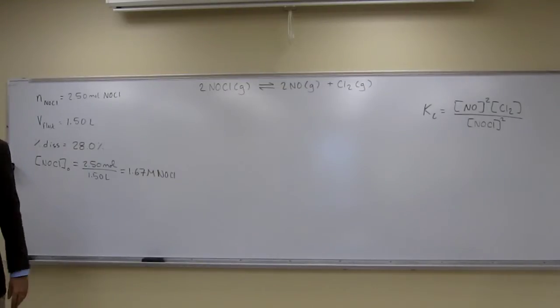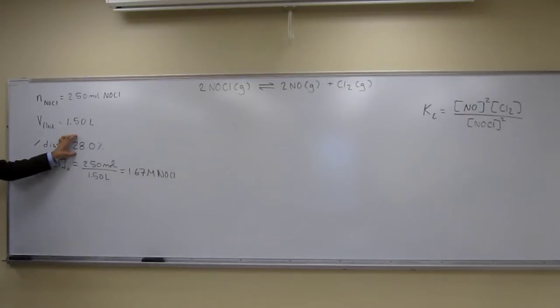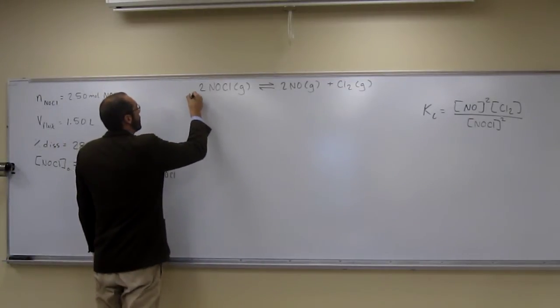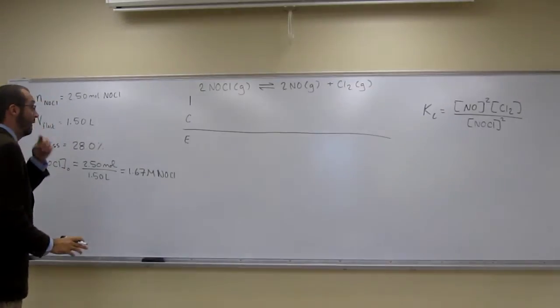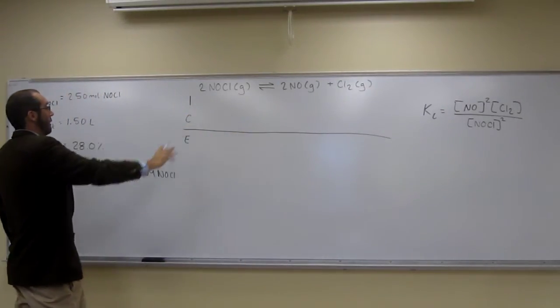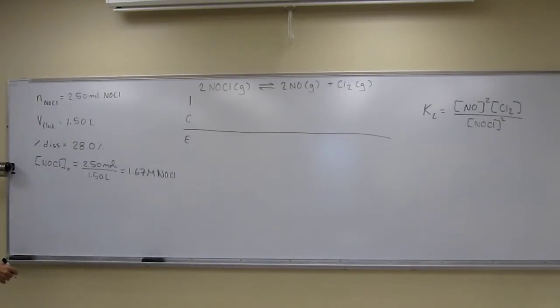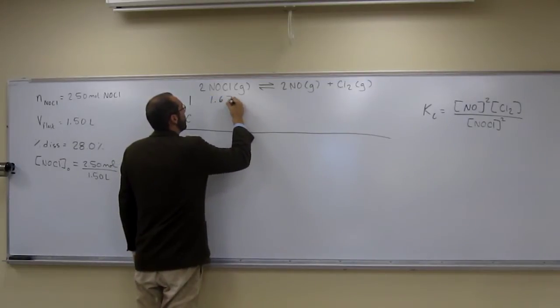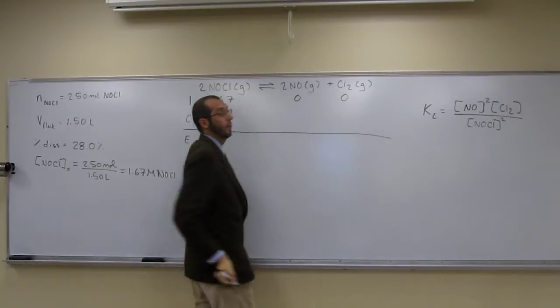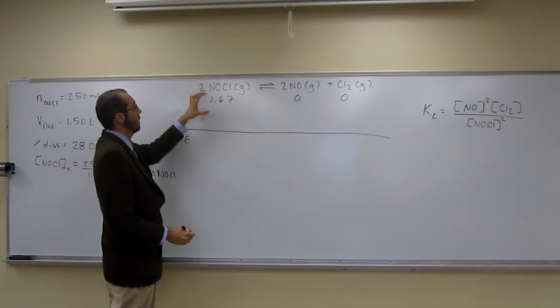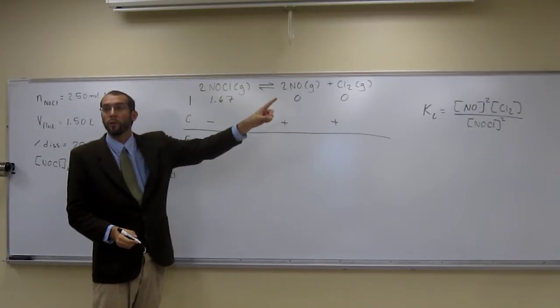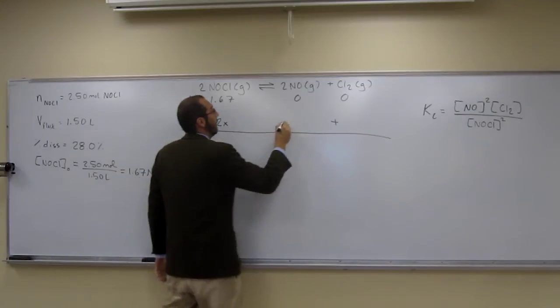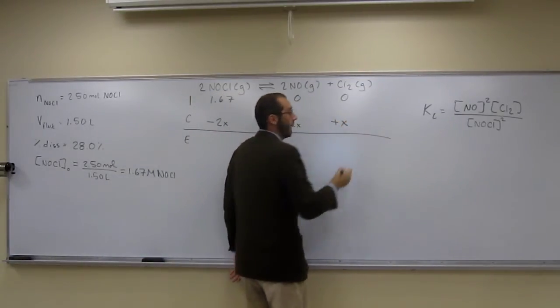In order to figure that out, we have to do an ice table. It also gives us a clue as to what's happening at equilibrium. This is being 28% dissociated. So let's just keep that in mind. Let's write our ice tables. I, C, E. They're all gases, so they're all going to be in it. And we know that, both from the reaction equation and the equilibrium constant expression, we know this is 1.67 molar. And we didn't have any of this, and we didn't have any of this to start out.